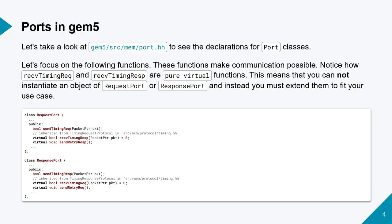If you look at the port classes in source/mem/port.hh, you'll see two types of ports: request ports and response ports. Request ports request some service, and response ports provide that service. The initiator of any transaction is a request port. For example, the port between your cache and your CPU — there's a port on your CPU that is a request port, and a port on your cache that is a response port. When you put the equal sign between these ports in Python, they become connected to each other. When the CPU wants something, it'll use its request port to send a packet to the response port connected to it.